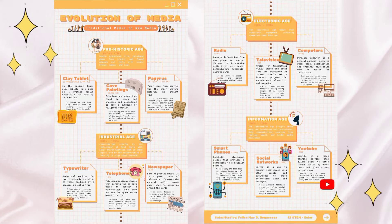The first activity we did was the timeline of exposure to traditional and new media. This is based on our second lesson: Evolution of Media. This activity is basically about the evolution of media from traditional to new. This timeline includes the four ages of media — the prehistoric, industrial, electronic, and information age — along with examples of media from the respective ages.